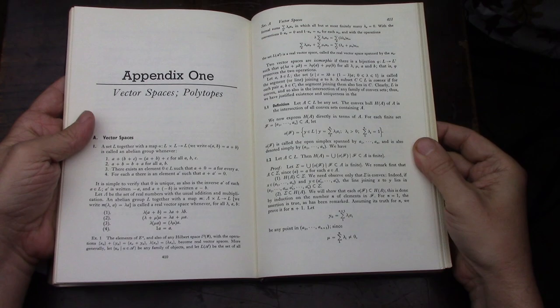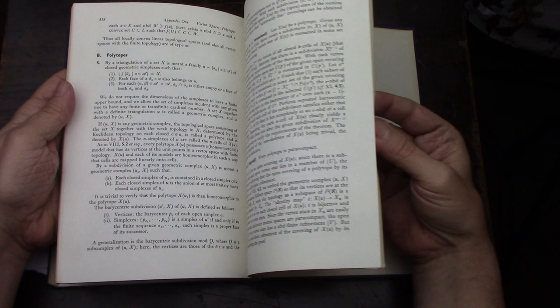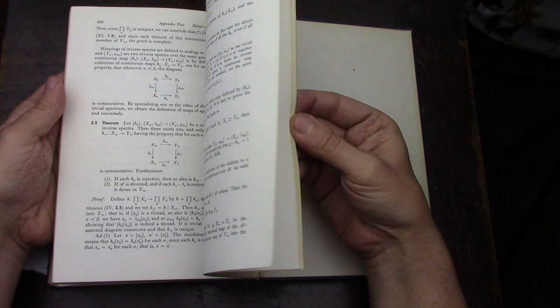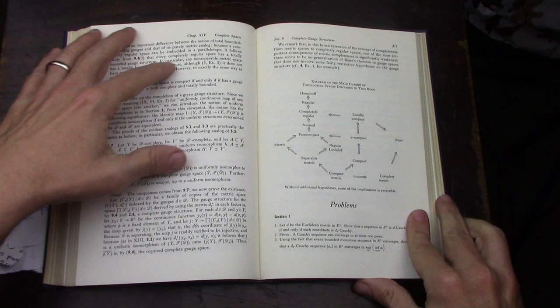So it's got an appendix on vector spaces and polytopes, which I don't know anything about. And then, one about direct and inverse limits. Also, I don't know anything about it. And an index.